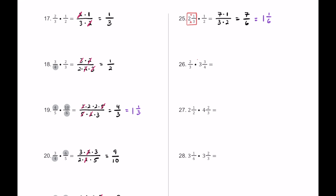For number 26, we have 2 thirds multiplied by 3 and 3 fourths. We turn 3 and 3 fourths into an improper fraction: 3 times 4 is 12, and 12 plus 3 is 15, giving us 15 over 4. So we multiply 2 thirds by 15 over 4. 15 is composite (3 times 5) and 4 breaks into 2 times 2. The 3s cancel and the 2s cancel, leaving us 5 over 2. As a mixed number, that's 2 and a half.